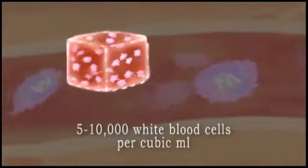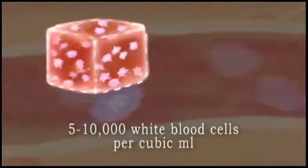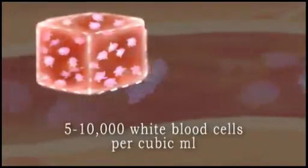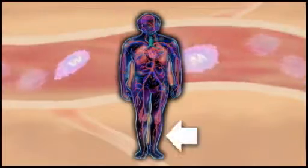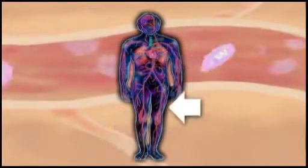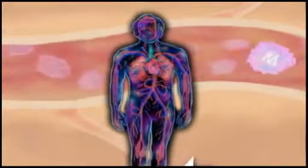There are 5,000 to 10,000 white blood cells per cubic milliliter of blood, far fewer than red blood cells. But leukocytes have the ability to travel freely from blood vessels to body tissues, using the circulation system like a freeway to converge at infection sites.